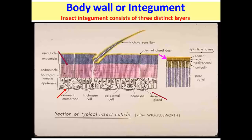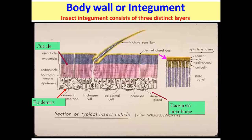The insect body wall has three major layers: the cuticle, the epidermis, and the basement membrane. The cuticle is the outermost layer, varying in thickness from one to four microns, and chitin is totally absent in the epicuticle portion. The epicuticle itself consists of four sub-layers: the outermost is the cement layer, followed by the wax layer, then the polyphenol layer, and the innermost is the cuticlin layer.